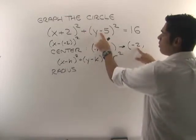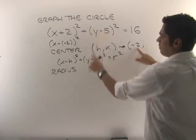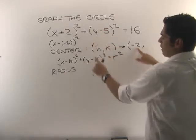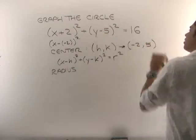And then here for the y coordinate or the k, all we do is we notice in the formula there's a minus here, minus here. So k is just 5. So that's our center.